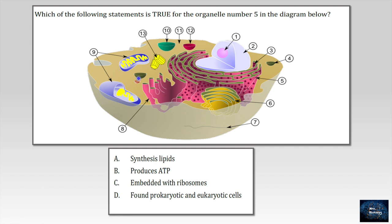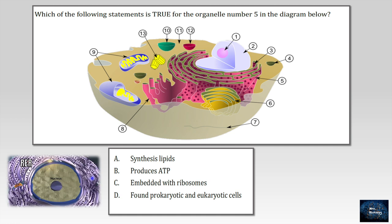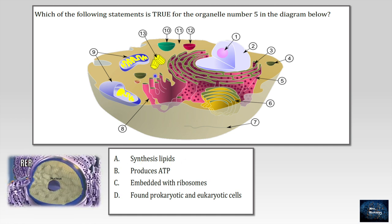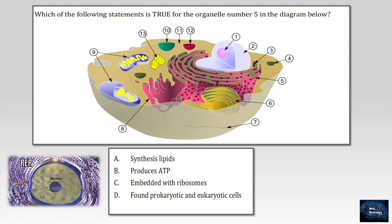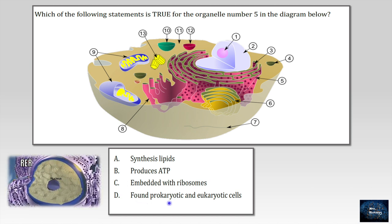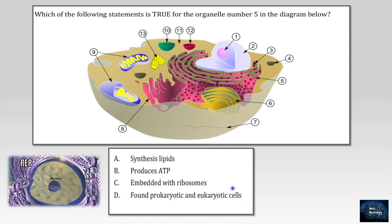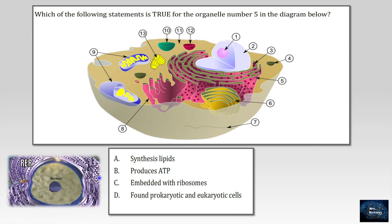In this question, which of the following statements is true for organelle number 5 in the diagram below? First of all, let's identify organelle number 5. It's very clear that it's the rough endoplasmic reticulum. It's a series of connective flattened sacs, part of continuous membrane organelle within the cytoplasm of eukaryotic cells. That plays central role in the synthesis of proteins. Why? Because it's embedded with ribosomes. Now, choice A, synthesis of lipids, that means smooth endoplasmic reticulum is responsible for. Choice B, produces ATP without thinking it's mitochondria. Choice D, found in prokaryotes and eukaryotic cells. Actually, no. There is no membrane-bounded organelles in the prokaryotes. So the right choice here is C.